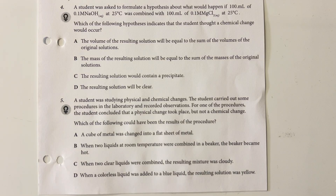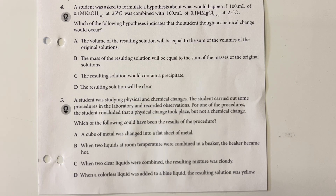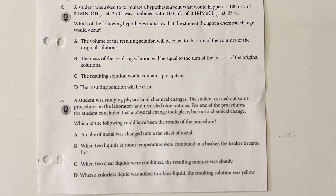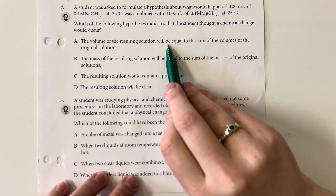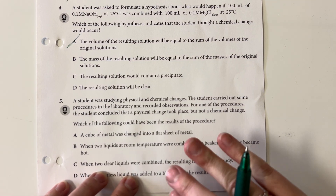A student was asked to formulate a hypothesis about what would happen if 100 milliliters of 0.1 molar sodium hydroxide at 25 degrees Celsius was combined with 100 milliliters of 0.1 molar magnesium chloride at 25 degrees Celsius. A chemical change is typically indicated by a change in color, a change in temperature, an evolution of gas, or a solid. The resulting solution volume being approximately equal to the original volumes added together is not indicative of a change.